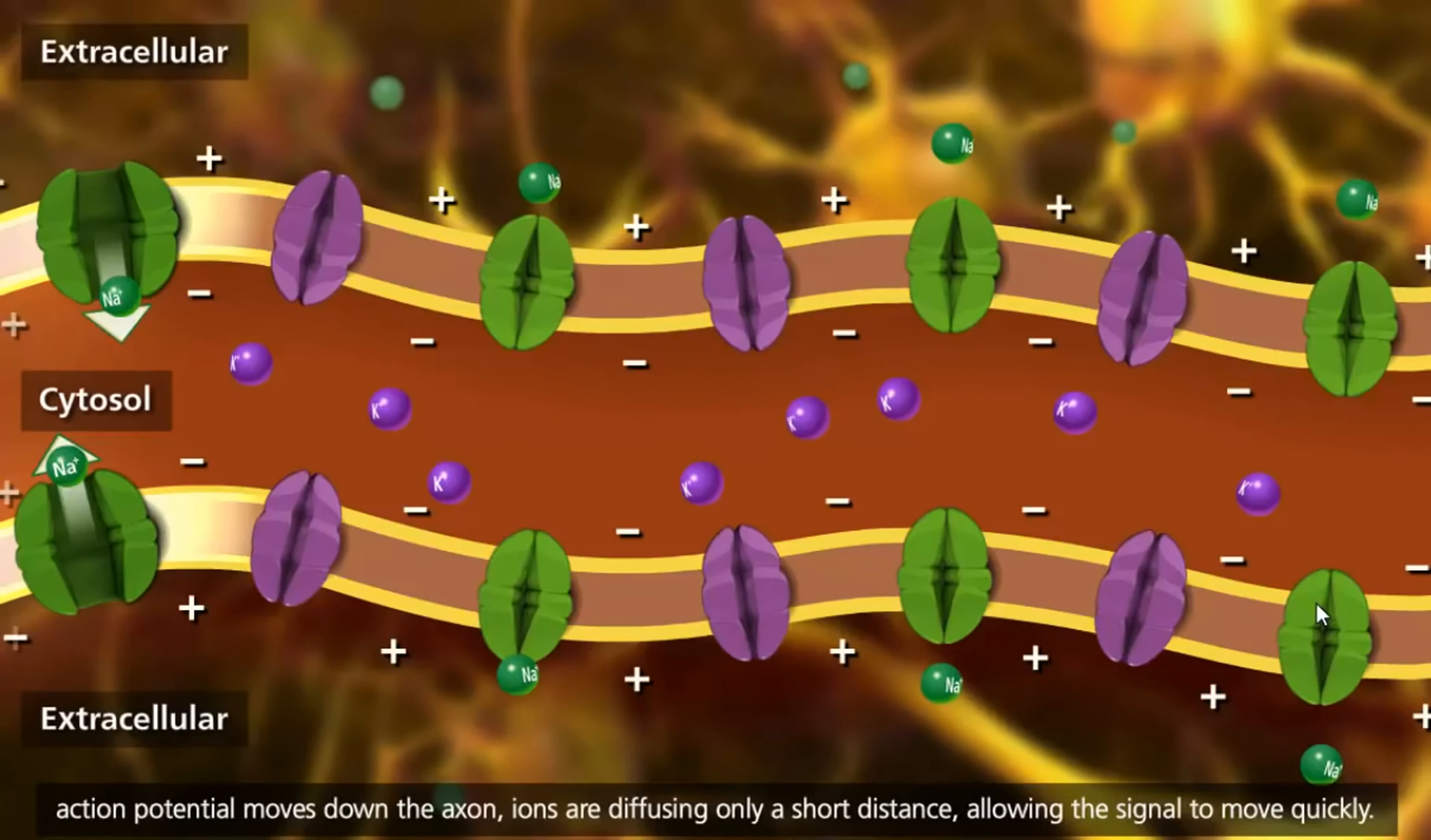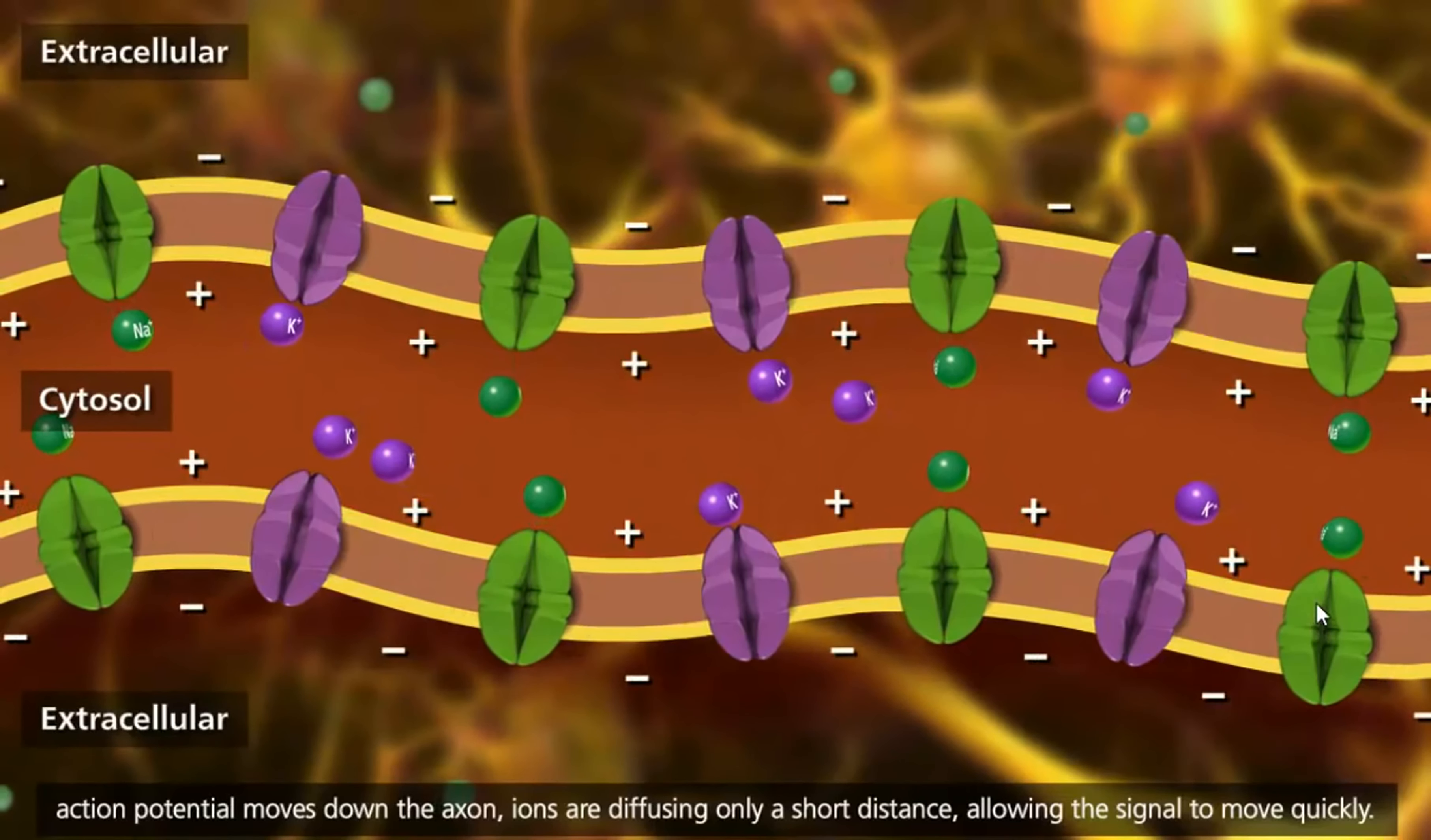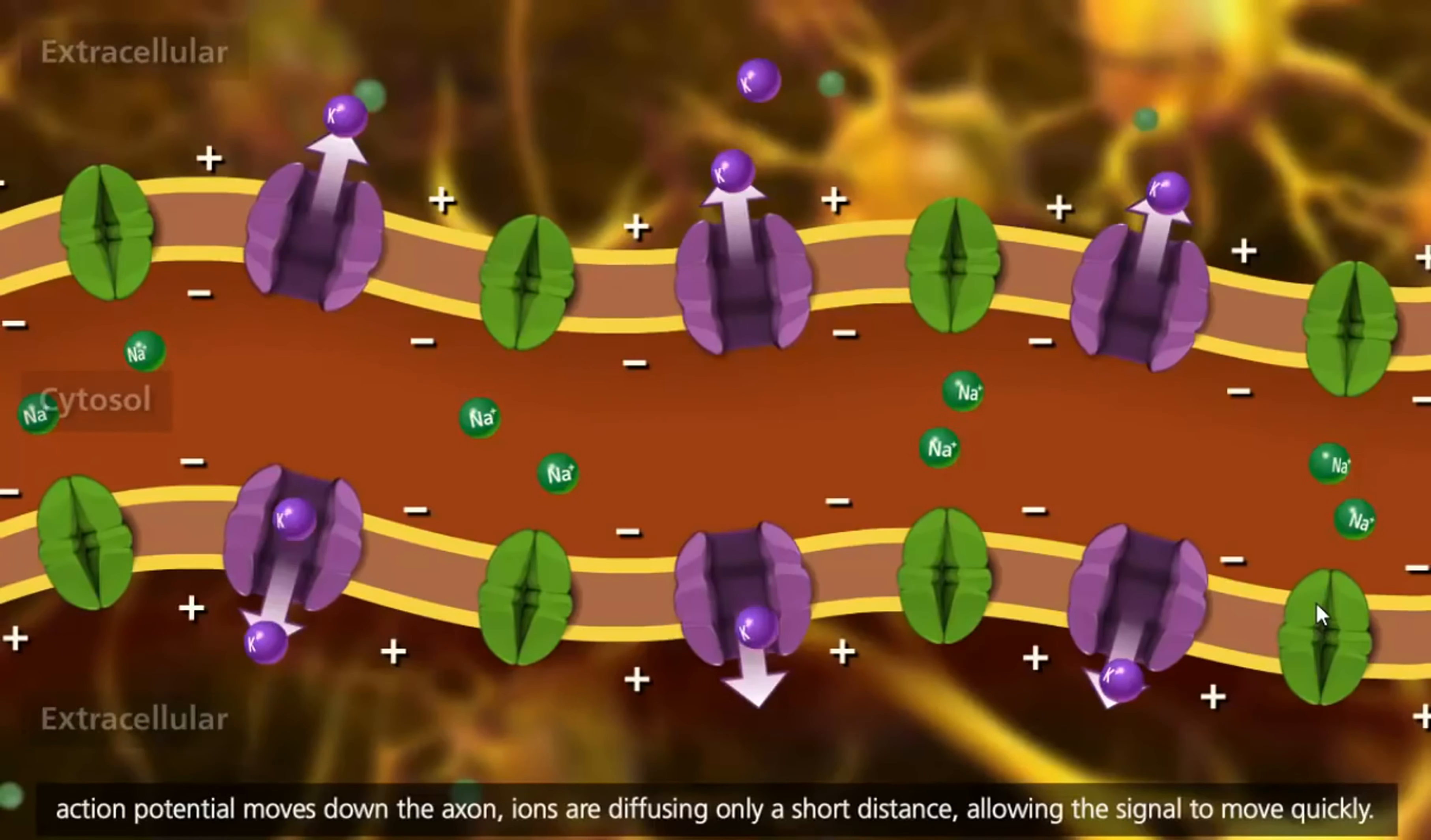As the action potential moves down the axon, ions are diffusing only a short distance, allowing the signal to move quickly.